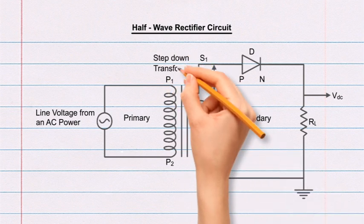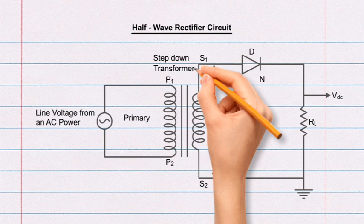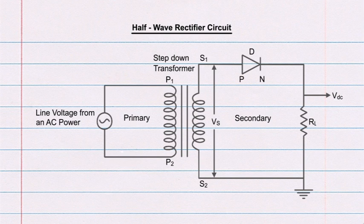Between P1 and S1, mark as step-down transformer. This completes the drawing of half-wave rectifier circuit diagram.